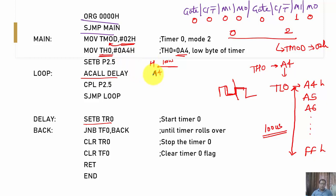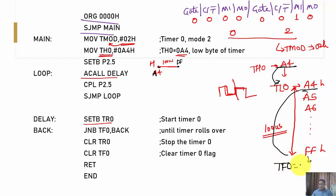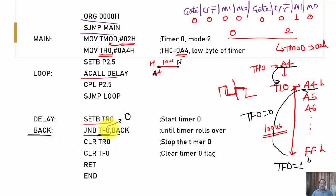When TL0 reaches FFh, a rollover occurs, the TF0 flag changes from 0 to 1, and A4h is automatically reloaded into TL0 from TH0. In the delay loop, the timer is started and we wait using 'JNB TF0, back' — looping while TF0 is 0. When rollover occurs and TF0 becomes 1, stop the timer and clear TF0.